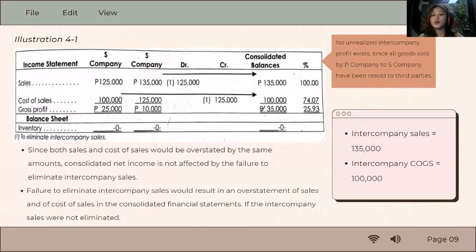And the 35,000 which is 135 less 100,000, that's really the only income here.